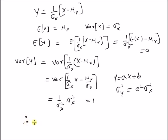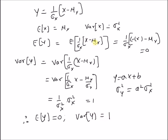Therefore, the mean of a standardized random variable is equal to 0 and the variance of the standardized random variable y is equal to 1. That is the meaning of standardization: you make the mean equal to 0 and the variance equal to 1.